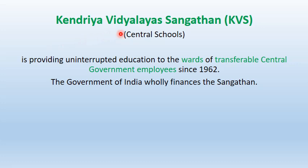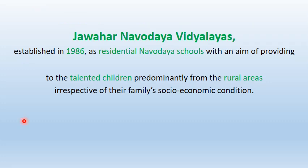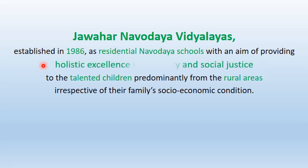Kendriya Vidyalaya Sangathan (KVS), which runs Central Schools, has been providing uninterrupted education to the wards of transferable Central Government employees since 1962; the Government of India wholly finances the Sangathan. Jawahar Navodaya Vidyalayas, established in 1986 as residential Navodaya schools, aim at providing holistic excellence with equity and social justice to talented children predominantly from rural areas, irrespective of their families' socio-economic conditions.